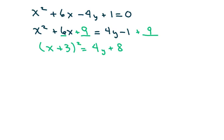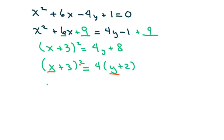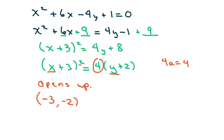This forms a perfect square trinomial. To match the general form, we write it as x plus 3 squared equals 4 times y plus 2, factoring out the 4. This is a parabola that opens up because it has the form y equals x squared. The vertex is negative 3 comma negative 2 — that's the h, k form. Setting 4a equal to 4, we get a equals 1.